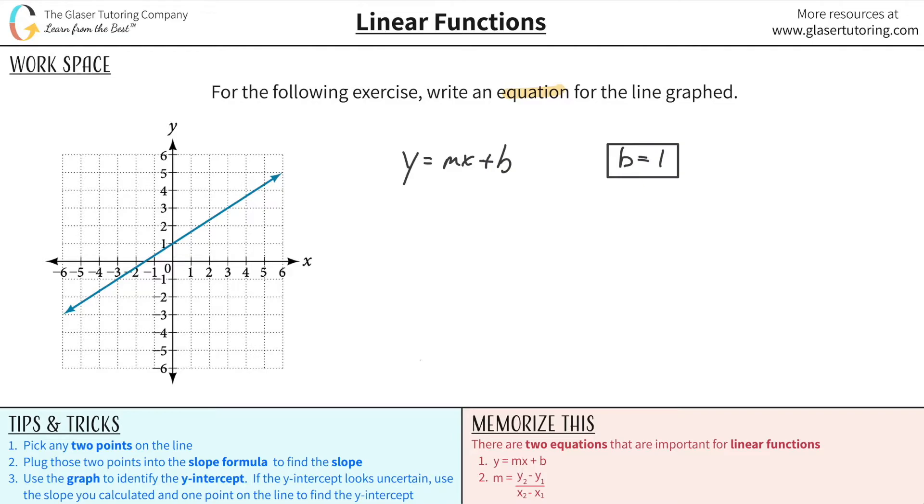Now, I want to find the slope. Now, you can do this in two ways. Either you can pick any two points, you got to be certain that you know those points, you can plug in any two points. And then solve the slope using the slope formula down here, y2 minus y1 over x2 minus x1.